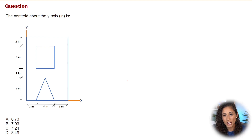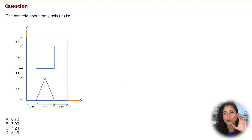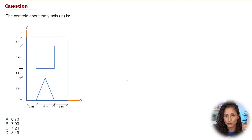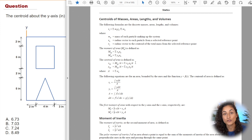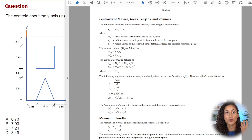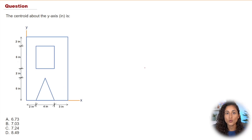To find the centroid above the y-axis for this shape, we're going to apply the same steps as we did when we found the centroid about the x-axis. If you haven't watched that video yet, I'll leave the link above. The first thing we do is go to the reference manual and grab the equation. For this problem we're going to use the equation for x-bar, since we're finding the centroid above the y-axis.